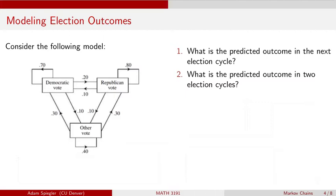In this model we have three different states: somebody votes Democrat, somebody votes Republican, or a voter votes for an independent candidate or somebody other than a Democrat or a Republican candidate.